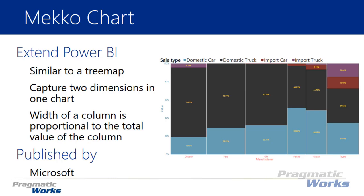It's almost like a mixture between a 100% stacked column chart and a 100% stacked bar chart in a single visual. So if you want to relate it to visuals you might already be familiar with, that's what it's a combination of. The width of each column is proportional to the total values of that column, so you'll see that column widths are not always similar to adjacent columns because they depend on the values in the data set.